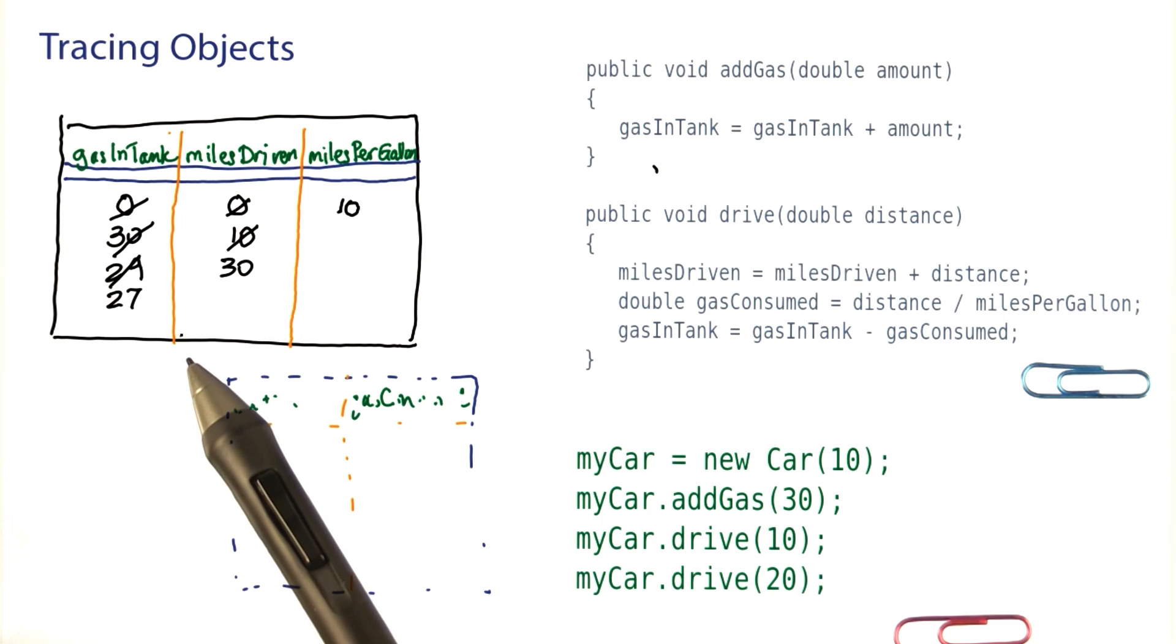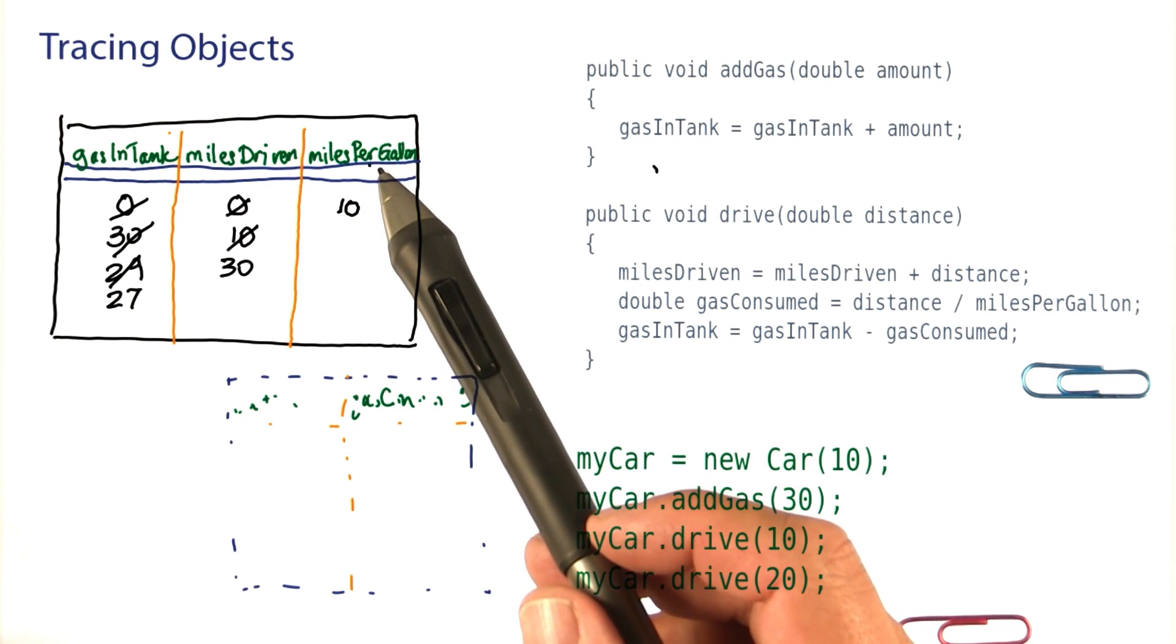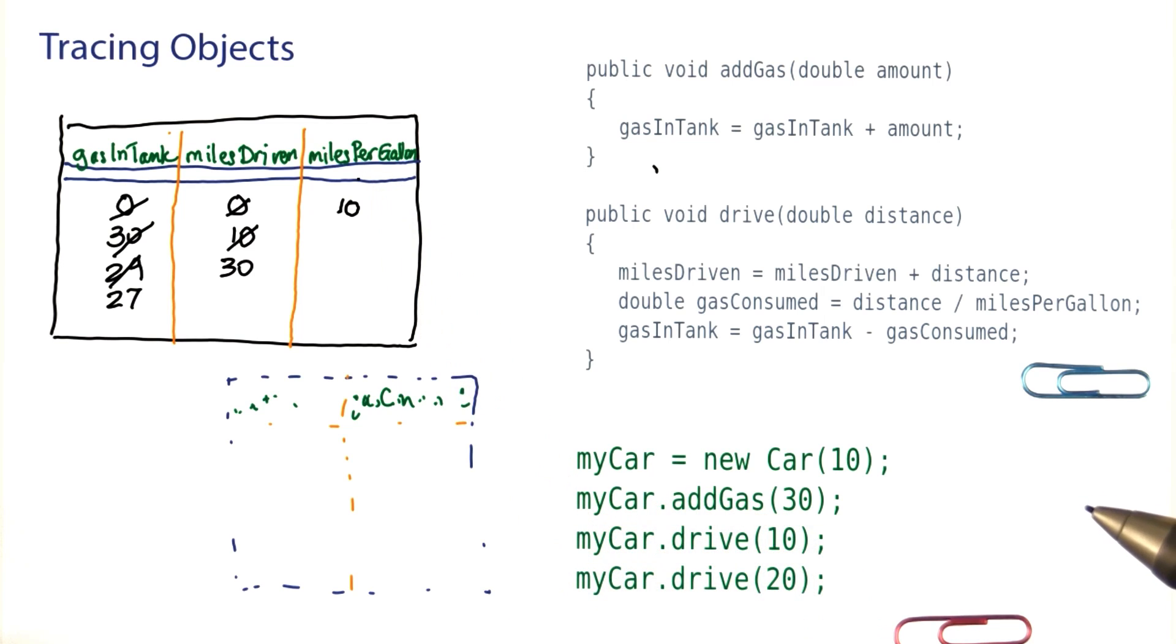Now what's the point? By doing this exercise, you gain an understanding of what the statements in the methods do to the instance variables of an object. Sarah will walk you through an example on how you can use this technique to find a bug in a method implementation.